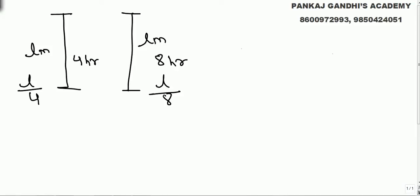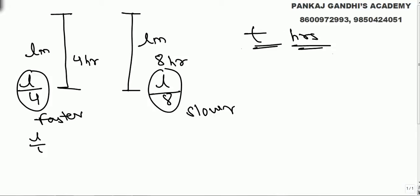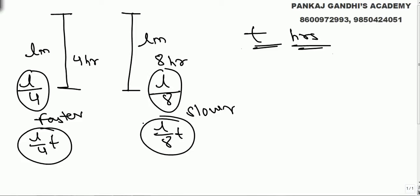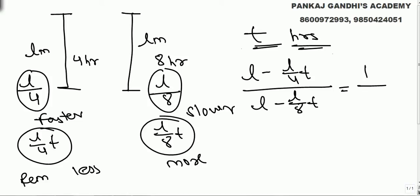The first candle burns faster and the second burns slower. If both were burning for t hours, the first will burn l by four times t, and the second will burn l by eight times t. So the remaining length of the first (faster) will be less, and the remaining of the second (slower) will be more.